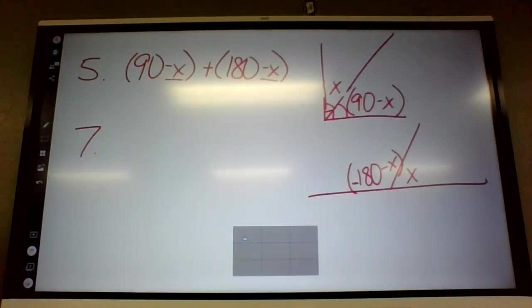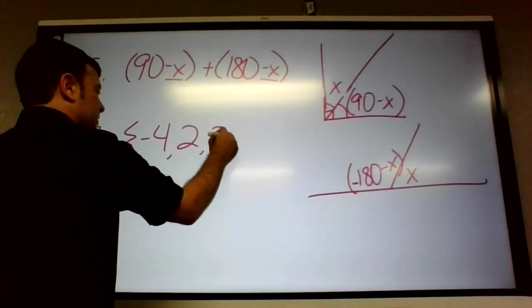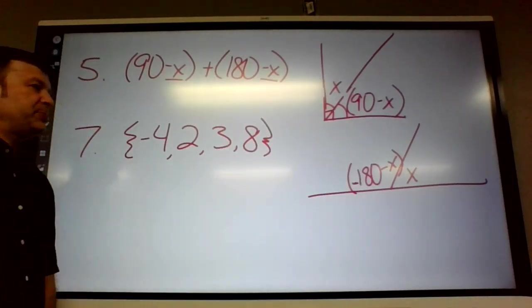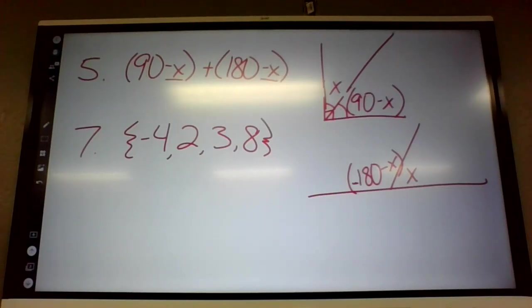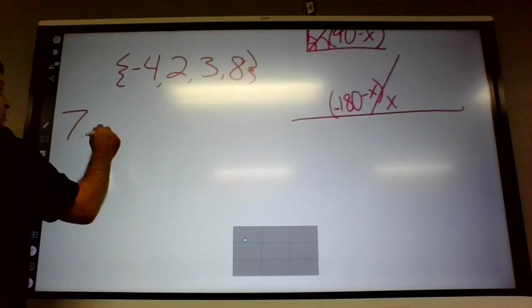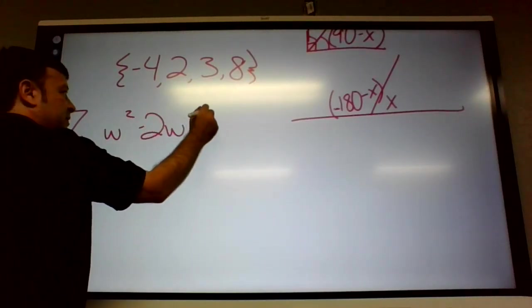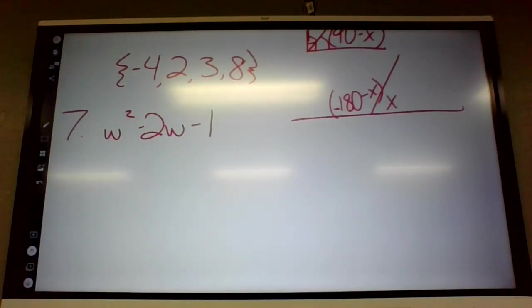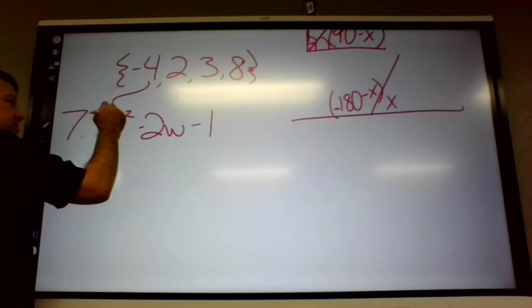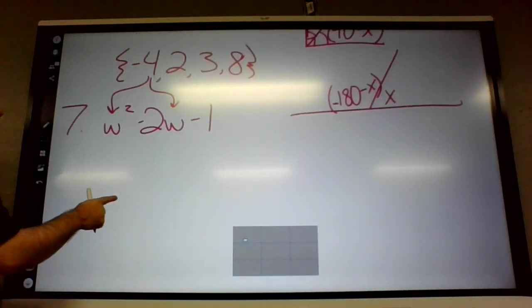Moving on. Number seven. It says evaluate each expression for each member of the domain. Negative four, two, three, eight. What does that mean? It's like all those good numbers. Right. Domain just means these are the numbers that we put in. And the range is the numbers that come out. So on seven, we're going to put those in to w squared minus two w minus one. So six and seven are going to have four answers each.